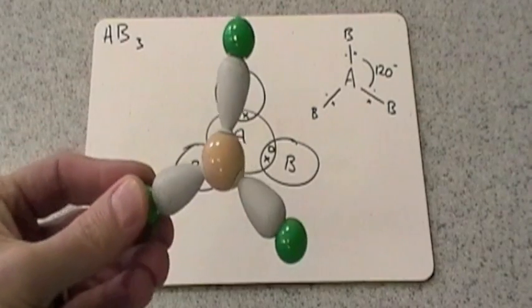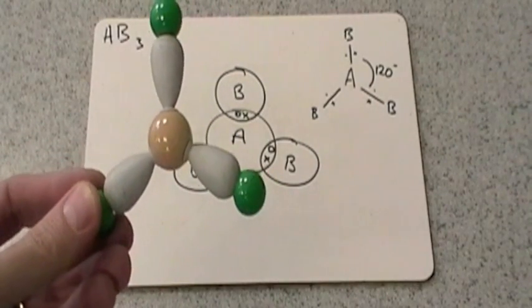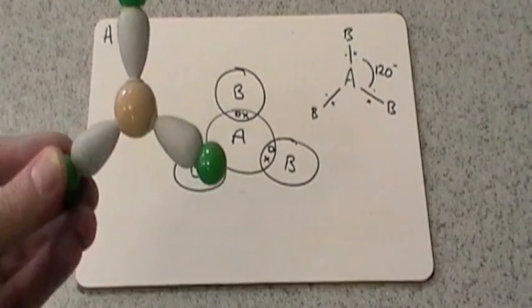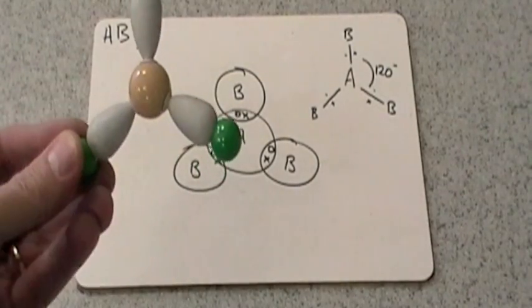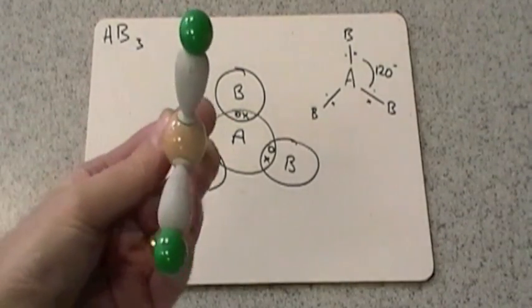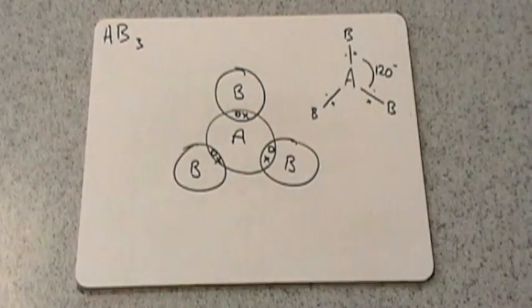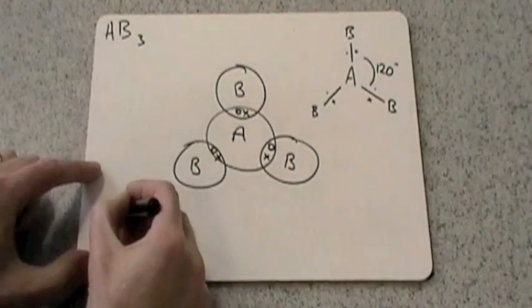So I'll just match it up with the diagram there. And that's called a trigonal planar molecule. Trigonal, triangular, planar, because it's flat. So trigonal planar. Let's write that on.